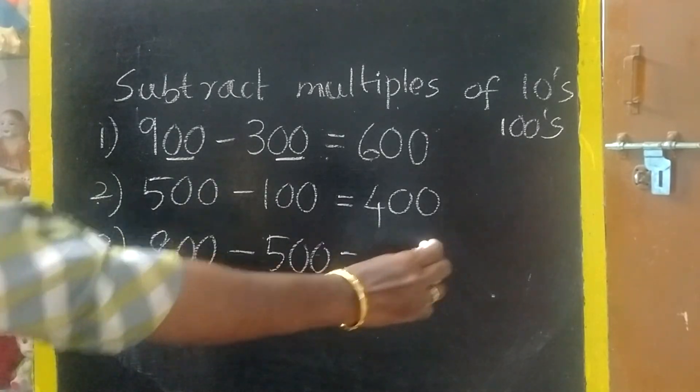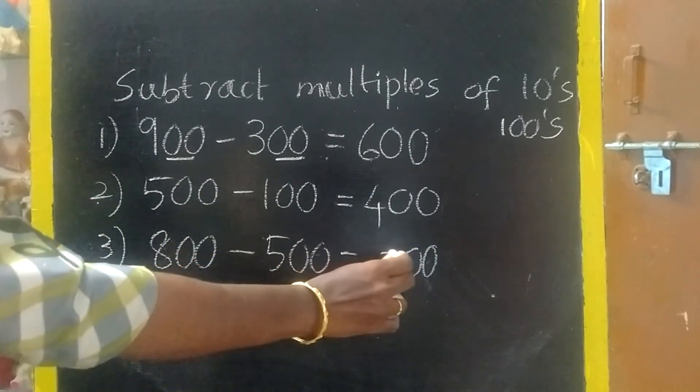Here also same. 0, 0. 8 minus 5, 3. The answer is 300.